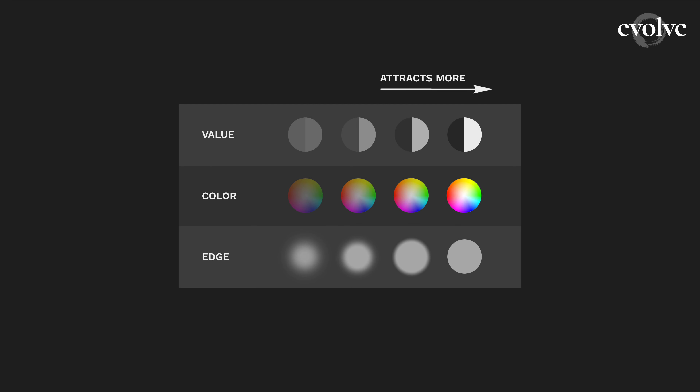There are three tools you can use to attract the eye without changing the composition: value, color, and edge. Let's quickly look at each one.